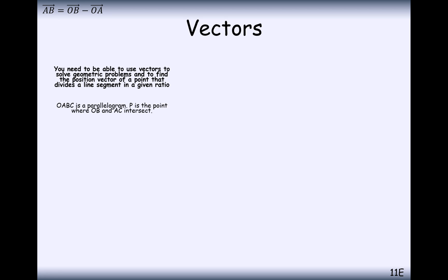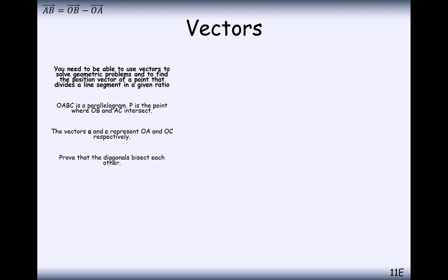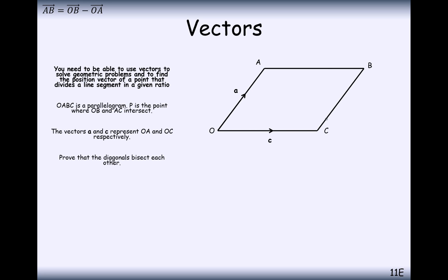Another question involving vectors. OABC is a parallelogram. P is the point where OB and AC intersect. The vectors a and c are represented by OA and OC respectively. Prove that the diagonals bisect each other. We have a parallelogram OABC, the diagonals are from O to B and from A to C, and they intersect at P. We want to prove they bisect each other — meaning P is the midpoint of both OB and AC.